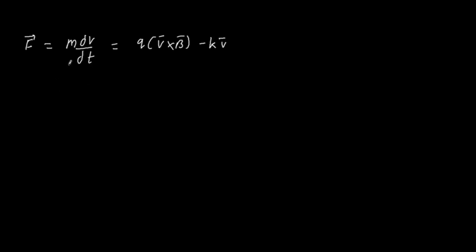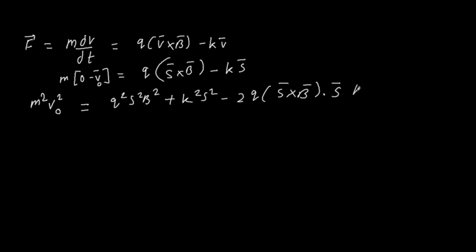If you integrate both sides and put the limit starting from V0 vector, which is initial velocity, to zero, you will get M times zero minus V vector is equal to Q times integration of velocity vector, which will be S vector cross B vector minus K times S vector. If you square both sides, you will get M square V0 square is equal to Q square S square B square plus K square S square minus 2 times Q S vector cross B vector dot S vector into K. Obviously, this term is zero because S vector is perpendicular to B vector.